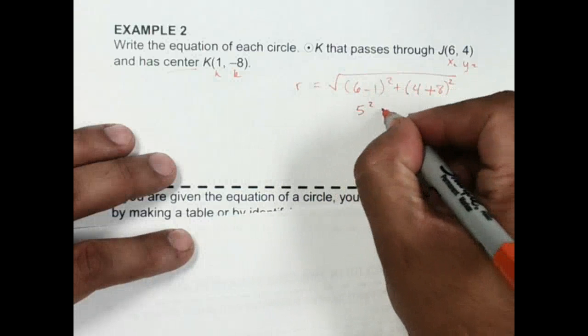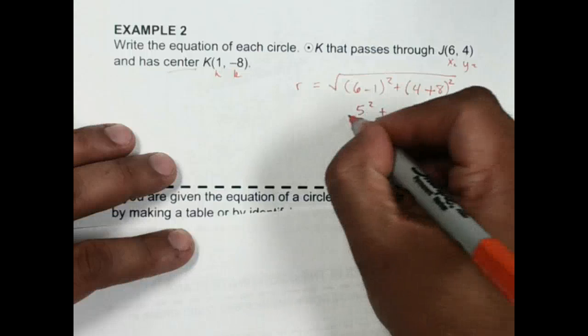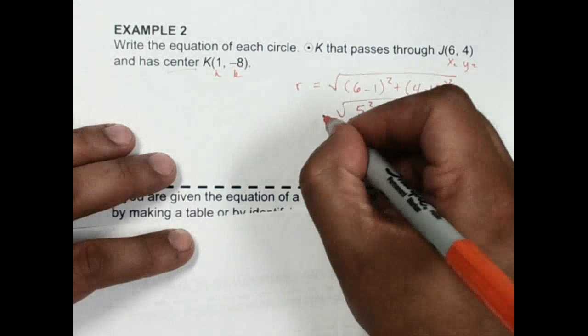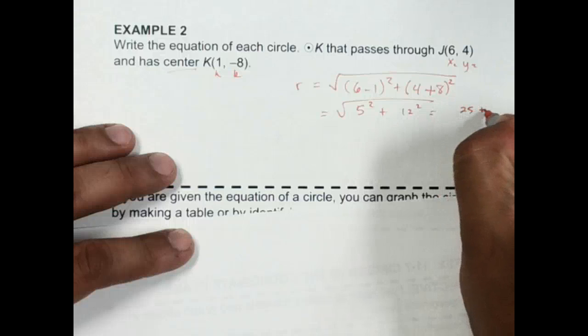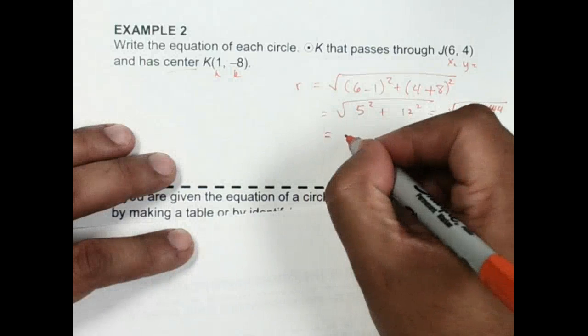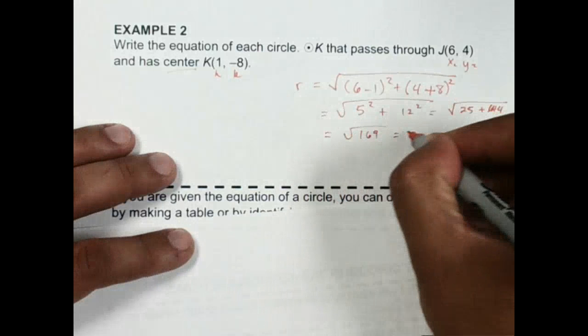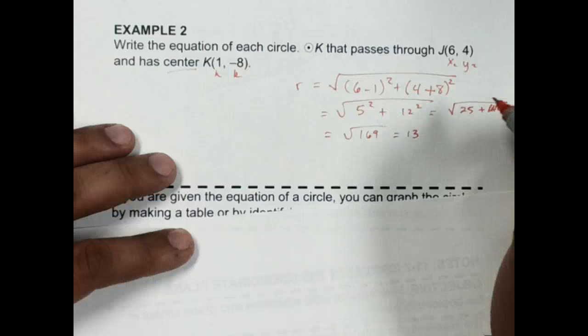So simplifying this out, this is 5² and that's 12². So that becomes 25 + 144, which is the square root of 169, which is 13. So our radius is 13.